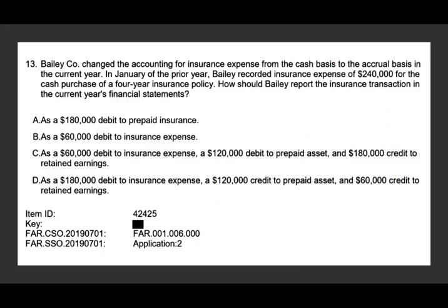Bailey company changed the accounting for insurance expense from cash basis to accrual basis. There's a lot of cash-to-accrual conversion on this exam. In January of the prior year, Bailey recorded insurance expense of 240,000 for the cash purchase of a four-year insurance policy. What they did was debit insurance expense 240,000 and credit cash 240,000 — all in the prior year.